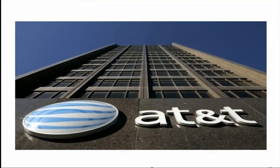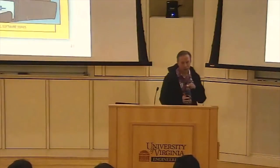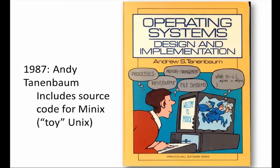Then things changed a little bit with AT&T. They changed their consent decree with the government, started to have a chance to get into the computer business, and began placing restrictions — telling universities they couldn't use the Unix source code anymore. This led Andy Tenenbaum to make a new version of Unix, an operating system inspired by Unix that didn't use any of the AT&T source code. He published a book in 1987 that included the source code for this new operating system, called Minix, that mimicked a lot of things Unix did but didn't have any of the encumbered AT&T source code.